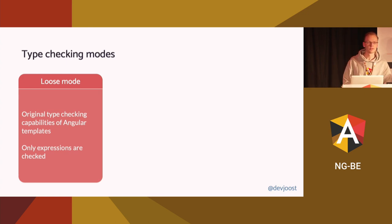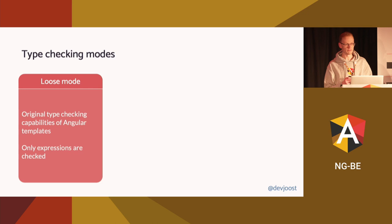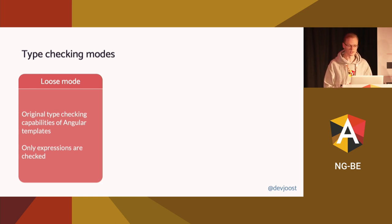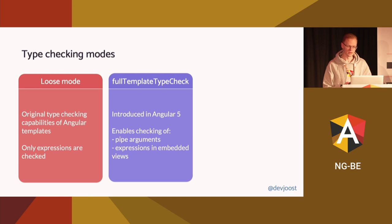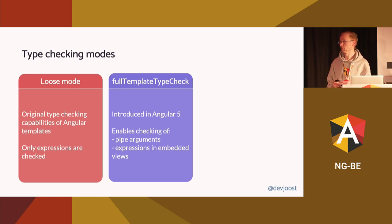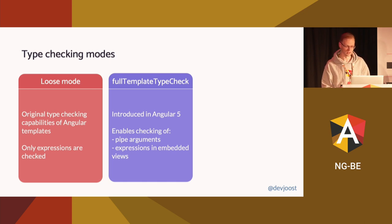From the early days of Angular, only the template expressions were type checked. There was no type checking of, for instance, pipes, and everything that occurred within embedded views — so structural directives like ngIf and ngFor — would also not be type checked at all. The compiler and TypeScript back then was simply not capable of doing this. Then, around the time of Angular 5, we extended the type checking capabilities with more exhaustive checks, where we gained the ability to type check pipes and also embedded views, among some other things. However, we wanted to avoid a breaking change for our users, so this new feature was introduced behind a compiler option named fullTemplateTypeCheck. This was an all-in option — you enabled the option and then you got all of the new type checking capabilities.